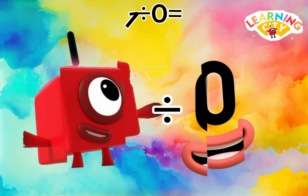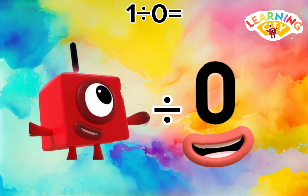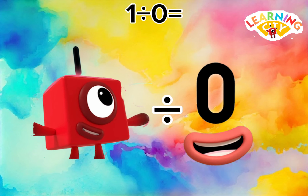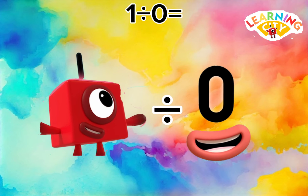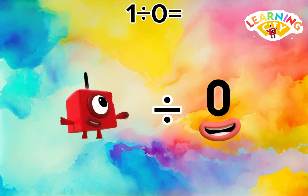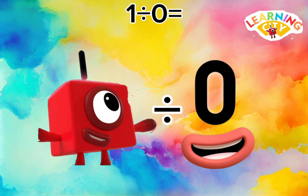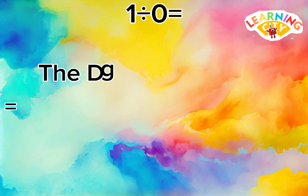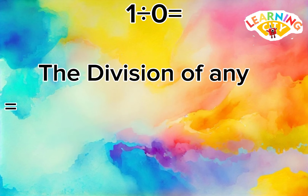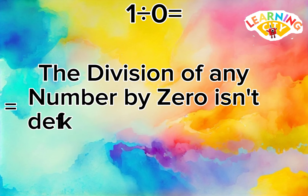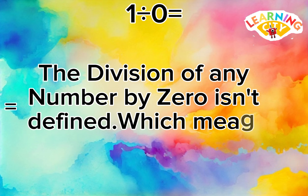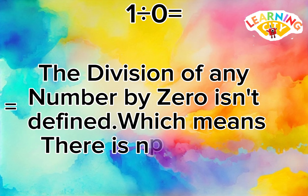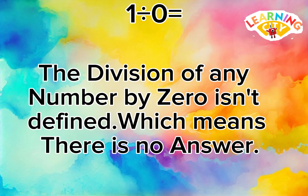1 divided by 0 equals — the division of any number by 0 isn't defined, which means there is no answer.